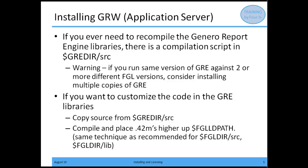If you ever need to recompile the Genero Report Engine libraries, there's a compilation script in GREDIR/SRC. If you're using the same version of GRE against two or more different FGL versions, consider installing multiple copies of GRE. Also, if you want to customize the code in any of these libraries, don't customize GREDIR/SRC directly — copy that source, then compile and place the resulting F2Ms higher up in the FGL LD path so it's hit first before our default GRE libraries.